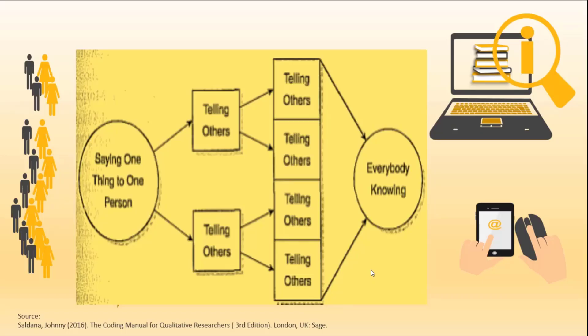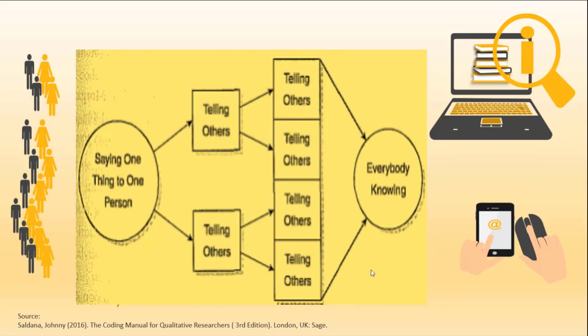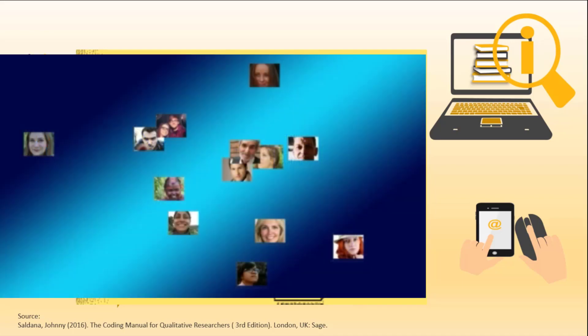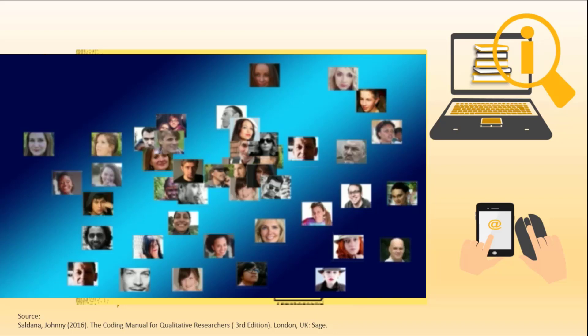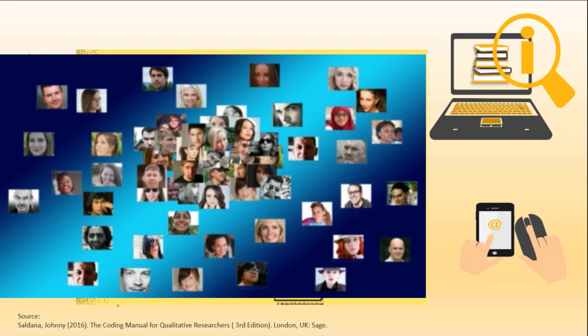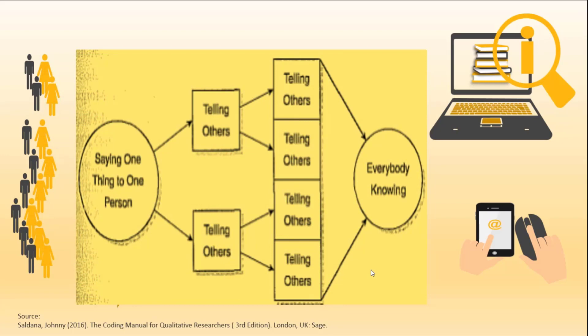In order for us to gather all information — not just bits of information — we need to capture all details until we reach that saturation point. In qualitative data, we must continue adding the number of subjects or participants when we gather information, and when no new information is added, then we can say that we have reached the saturation point, and that is the time we stop gathering information.